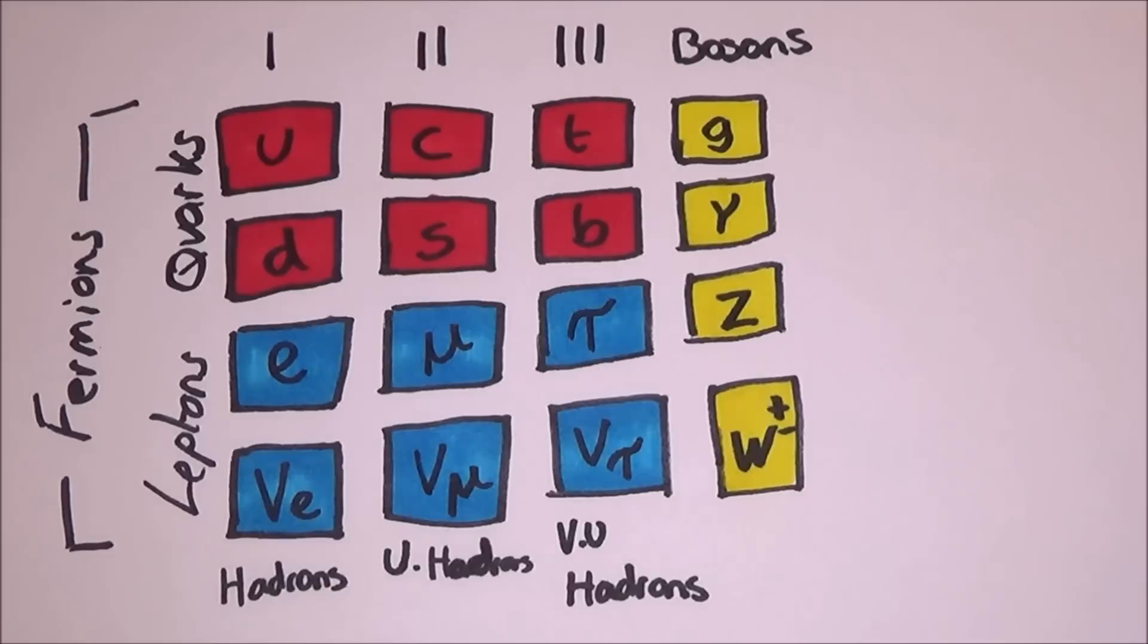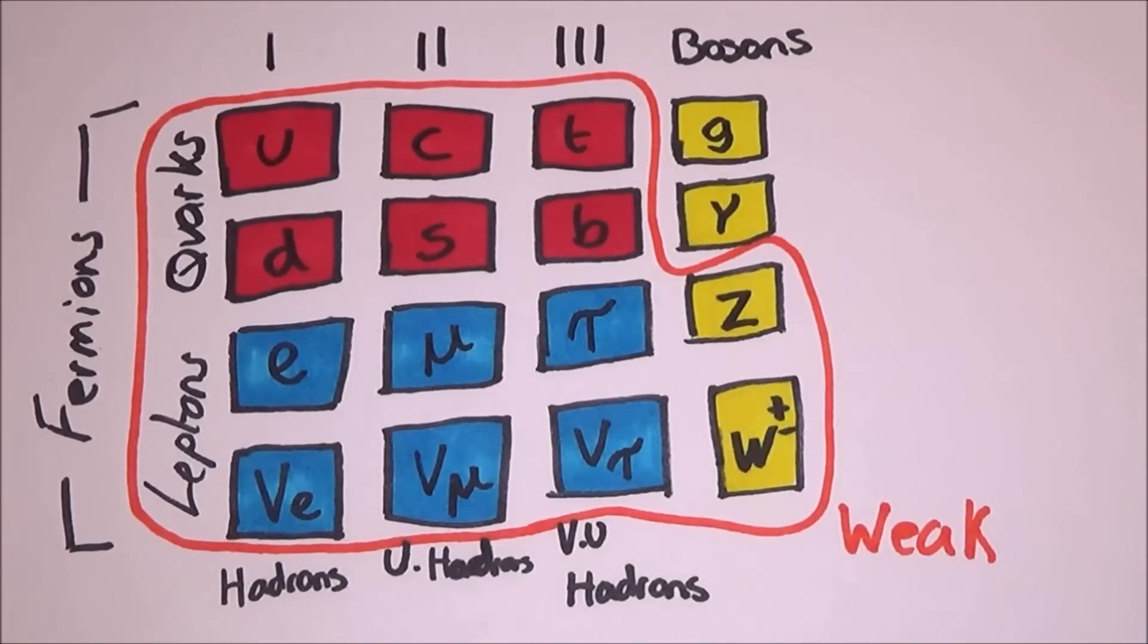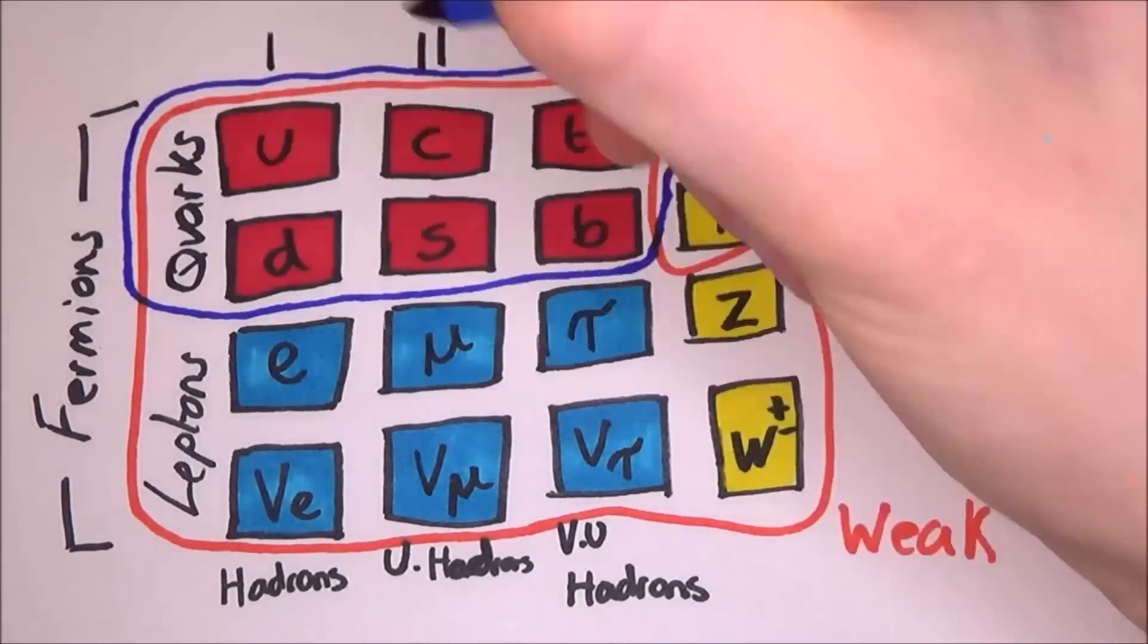All the fermions and the z and w bosons are all affected by the weak nuclear force. All the quarks and some of the gluons are affected by the strong nuclear force.